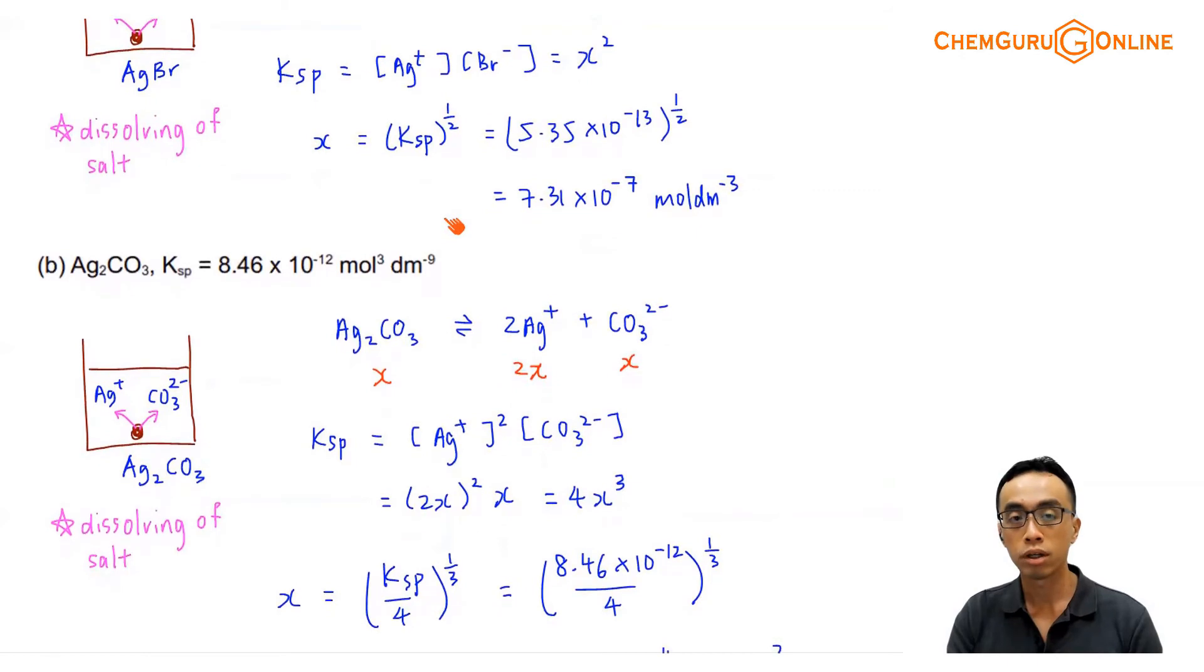B, the idea is essentially the same, it's just the number of ions dissociated is different. One Ag2CO3 will give me 2 Ag+ and 1 carbonate. So the dissociation is 1 to 2 to 1, so therefore X to 2X to X.